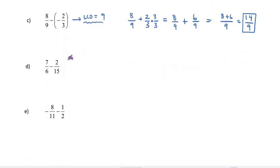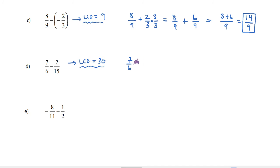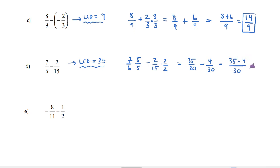For 7 over 6 minus 2 over 15: 6 factors as 2 times 3 and 15 factors as 3 times 5, so the LCD is 2 times 3 times 5 = 30. Multiply 7 over 6 by 5 over 5 to get 35 over 30. Multiply 2 over 15 by 2 over 2 to get 4 over 30. Then 35 over 30 minus 4 over 30 equals 31 over 30.